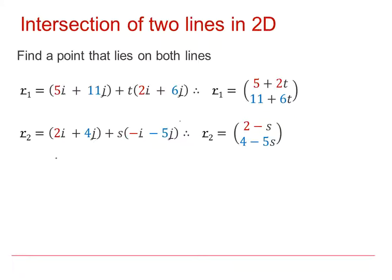And for these two lines to meet, we need to find a point where R1 is in the same place as R2. So we need 5 plus 2T, 11 plus 6T, to be in the same position as 2 minus S, 4 minus 5S.